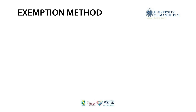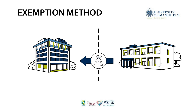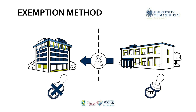Capital import neutrality is achieved by the exemption method. Under the exemption method, foreign income is only taxed in the foreign country and exempt from taxation in the domestic country. Thus, all investments are taxed uniformly from the perspective of the foreign country.